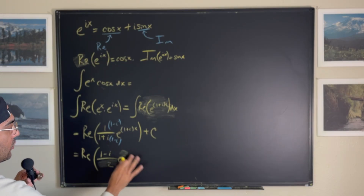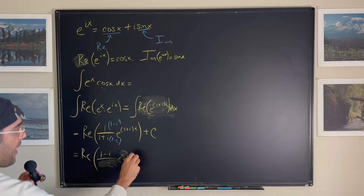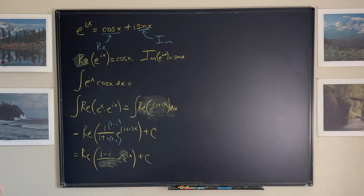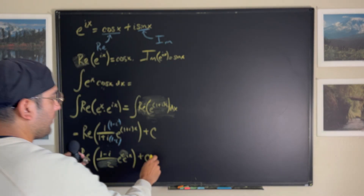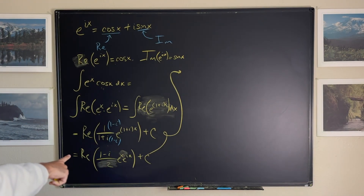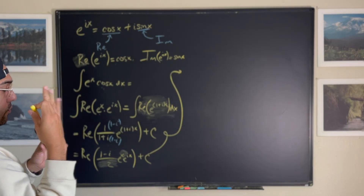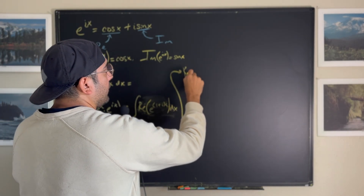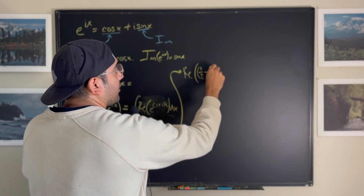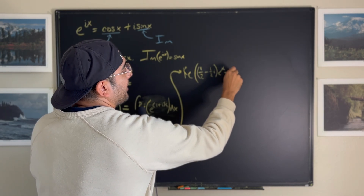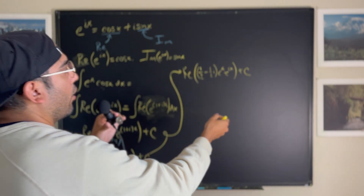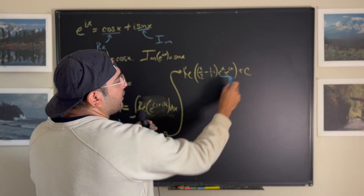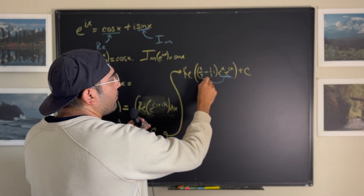Now I'm going to rewrite e to the (1+i)x as e to the x times e to the ix. So our expression becomes the real part of (1−i)/2 times e to the x times e to the ix, plus C. Breaking apart (1−i)/2 gives us one half minus one half i, times e to the x, times e to the ix. I'm going to distribute e to the x and e to the ix to both of those terms.